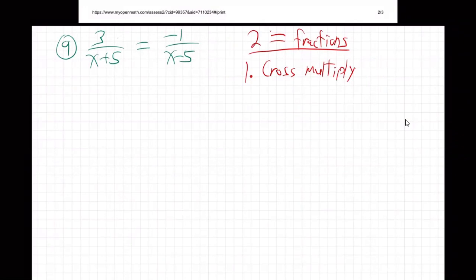What do I mean by cross multiply? I mean, you go this to that three to the x minus five and the x plus five to the minus one. So we end up with three times x minus five and minus one times x plus five. Just diagonal, diagonal, cross multiply.